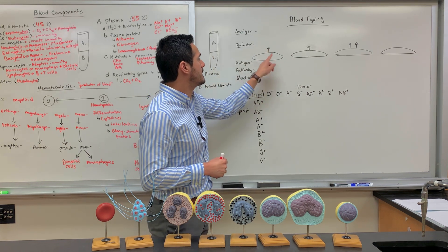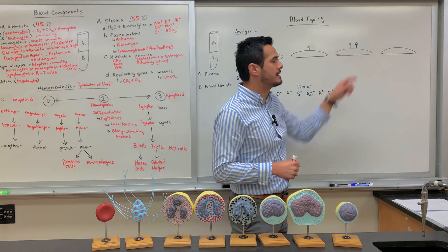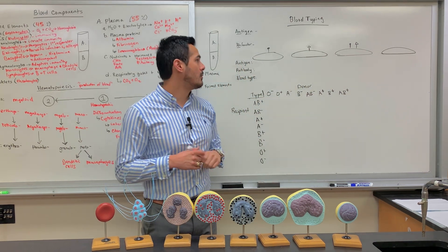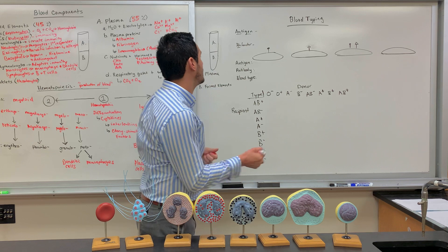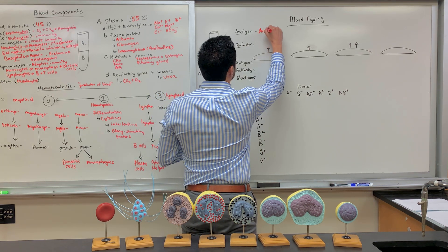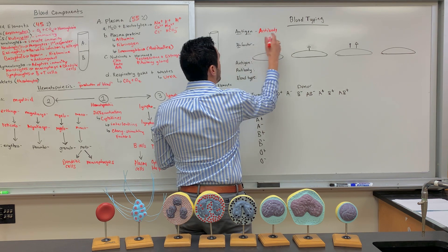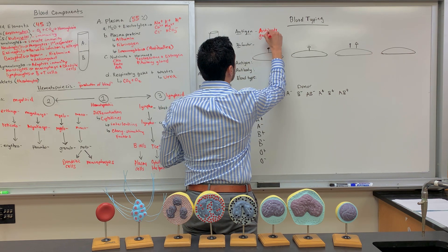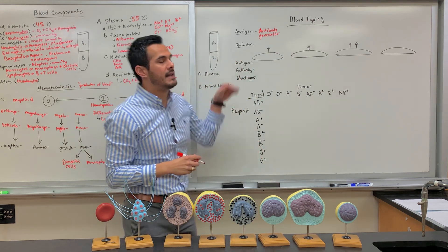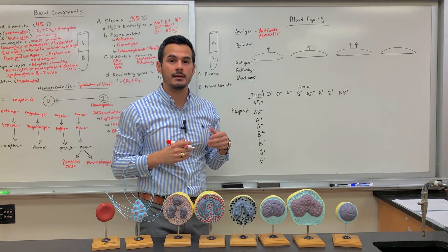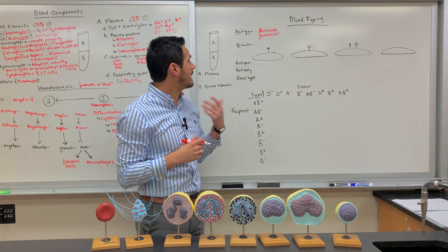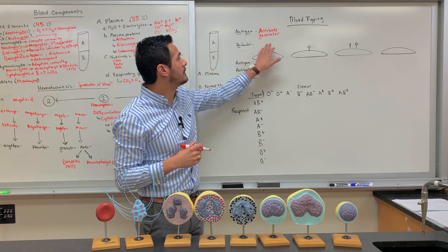These sticks that I have drawn here on the top, this is what represents what we know as an antigen. What antigen stands for is antibody generator — that's the 'anti' part, antibody generator. So an antigen is just something that the immune system will recognize, and when it recognizes it, it can form antibodies.